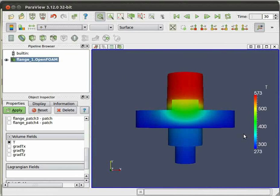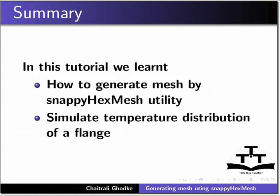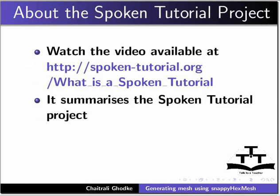This brings us to the end of the tutorial. As an assignment, change some parameters in the snappyHexMeshDict — refinement parameters, location-in-mesh coordinates, snap controls, etc. You can also change the temperature in the zero folder and view the results in ParaView. In this tutorial, we learnt to generate mesh using the Snappy Hex Mesh utility in OpenFOAM and simulate temperature distribution of a flange. Watch the video available at the shown URL.